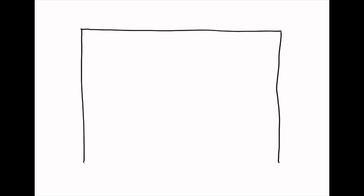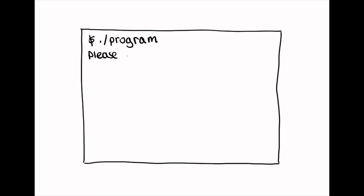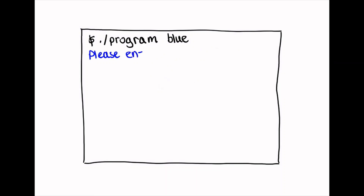So far, when we want to feed input into a program, we will first run the program, then at some point during its execution, it will ask the user for input. What if you would like to know some information from the user prior to the execution of the program? For example, if you would like to know whether the user likes the color red or blue so that you can display all outputs in a favorite color. Command line arguments allow us to feed inputs into the program before it is executed.